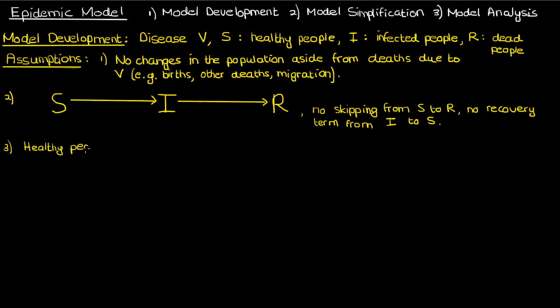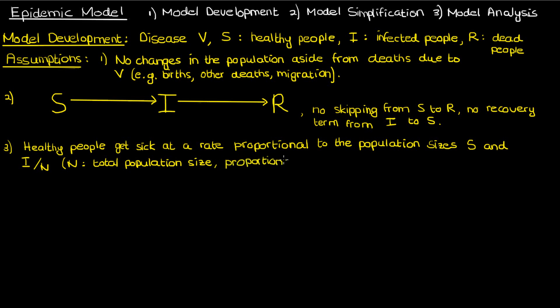Our third assumption is that healthy people get sick at a rate proportional to S and I over N, where N is the total size of the population. This makes sense, the more healthy people there are the greater the pool of individuals for the disease to infect. In addition the probability that a healthy person encounters a sick person is I over N, so the more sick people there are the greater the probability the more likely it is for the healthy person to get infected from a sick person spreading the disease. We'll assume the proportionality constant is a positive constant beta.